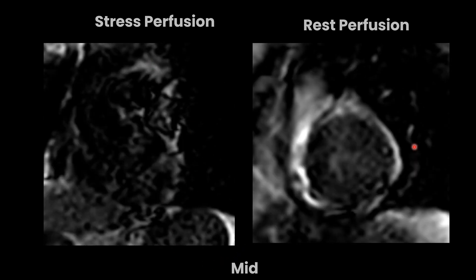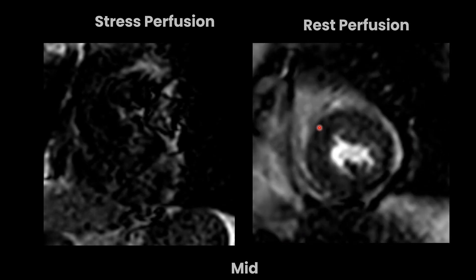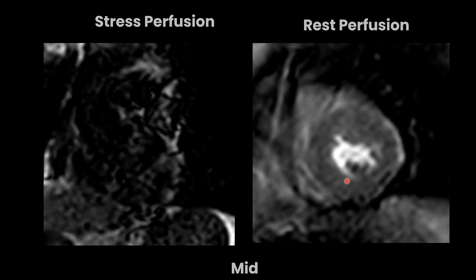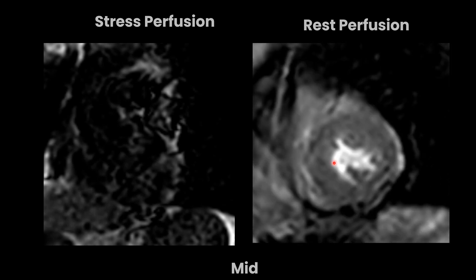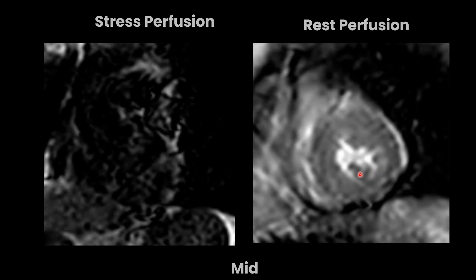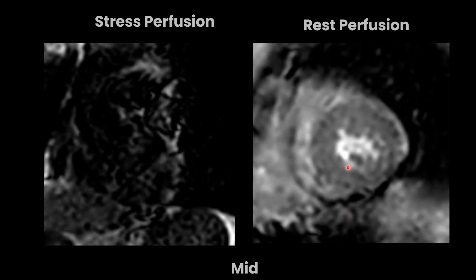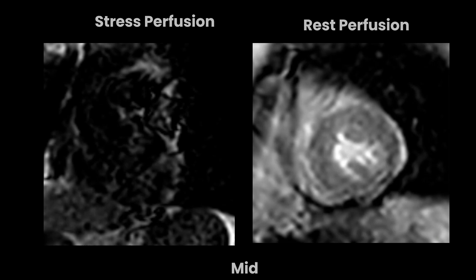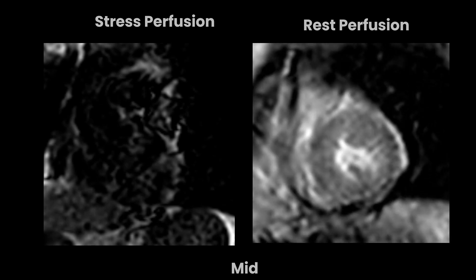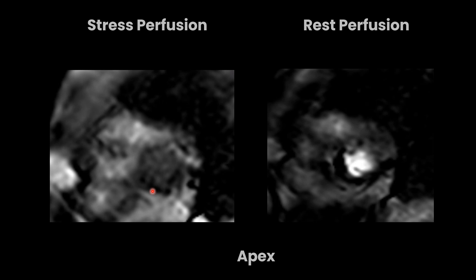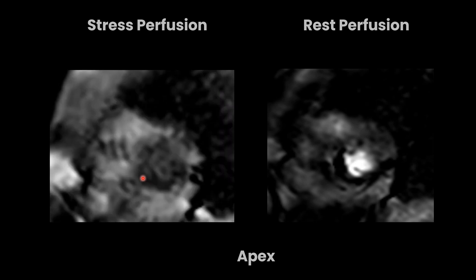In rest perfusion, without adenosine, when contrast enters the right and left ventricle lumen, there are no perfusion defects seen within the left ventricle subendocardium. This is the mid segment of the left ventricle. Coming to the apex, there is a perfusion defect which is seen here.